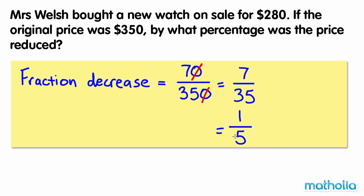To express this as a percentage, we need to find an equivalent fraction that has a denominator of 100. Multiplying both numbers by 20 gives 20 over 100. 20 hundredths equals 20%.